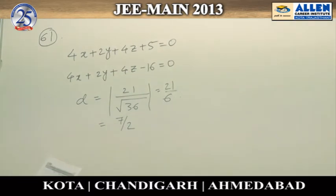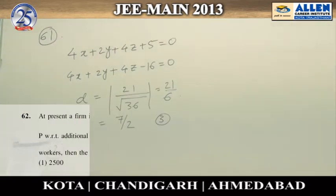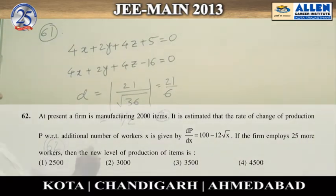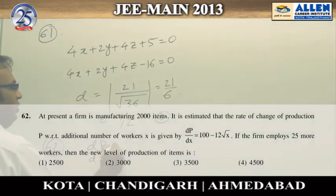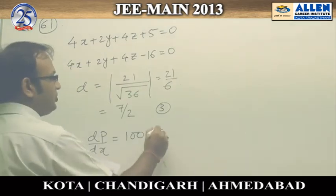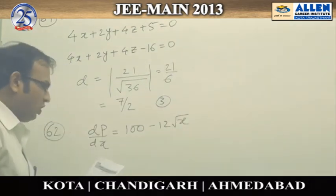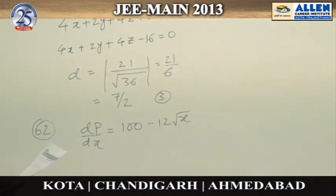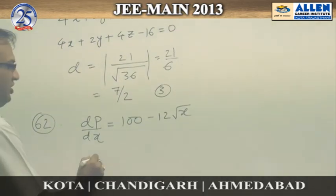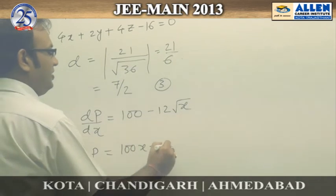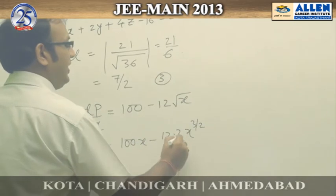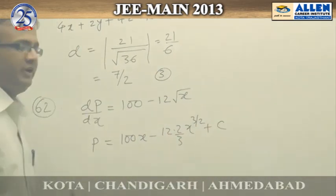Moving to question number 62: we are given that dp/dx = 100 - 12√x, where p is the production of the item and x is the number of additional laborers employed. We integrate to get p, so p = 100x - 12 × (x^(3/2)) × (2/3) + C, where C is the constant of integration.